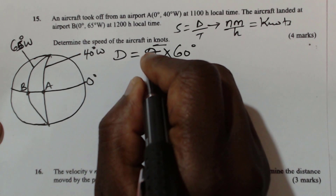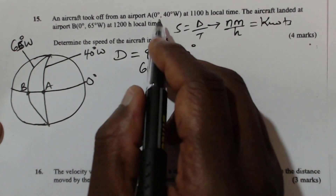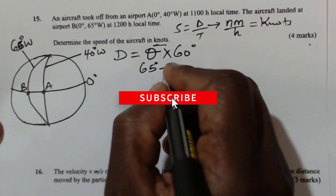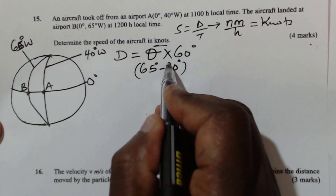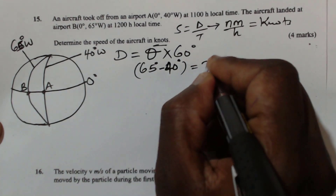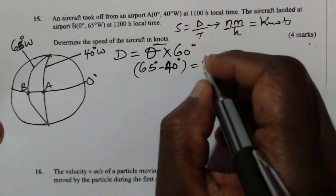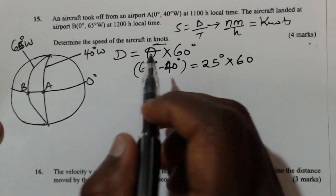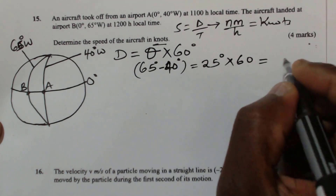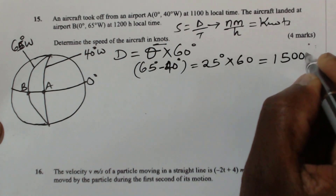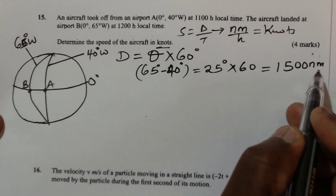To get the longitude difference, which is theta, we take 65 degrees and subtract 40 degrees. This gives the longitude difference as 25 degrees. To convert that to nautical miles, we multiply by 60. So the distance is 25 degrees multiplied by 60, which gives 1500 nautical miles. This is the distance between A and B.